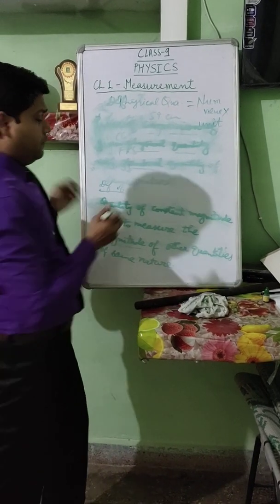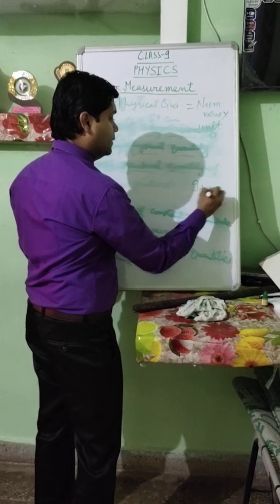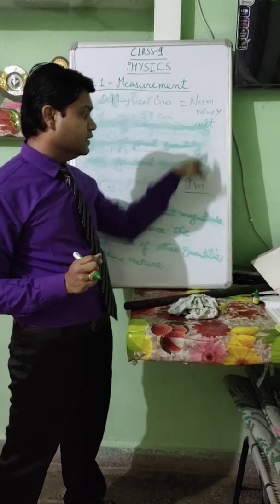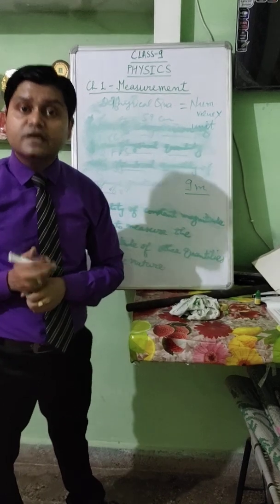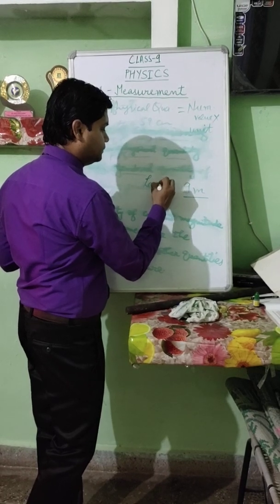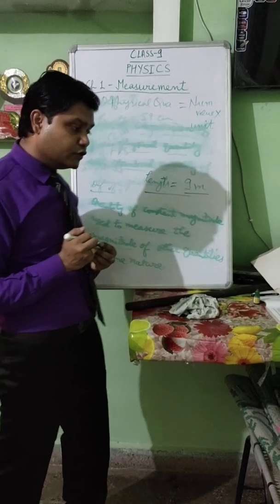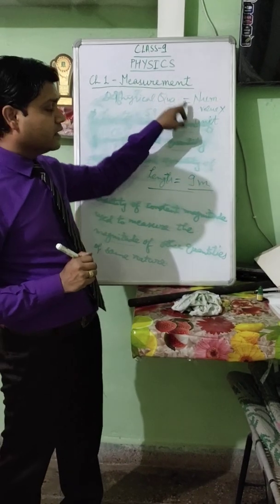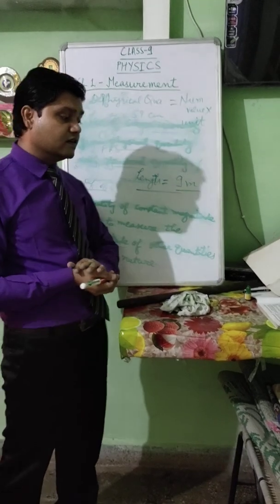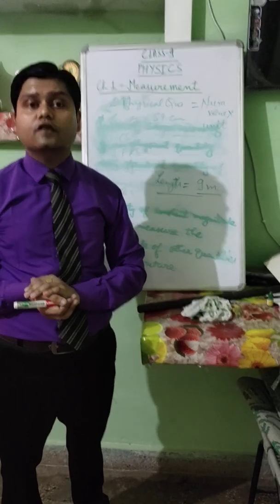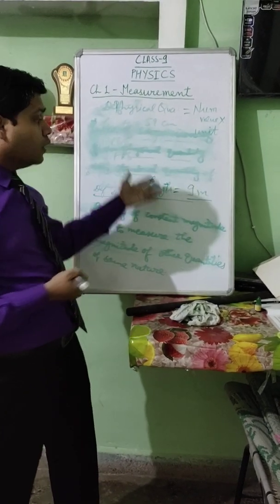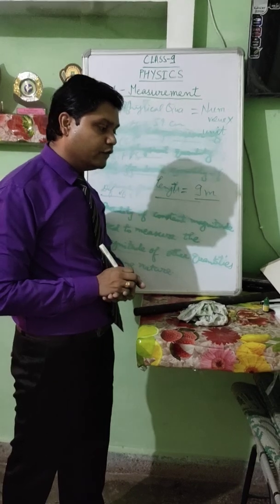For example, if I write 9 meters, then 9 is the numerical value and meters is the unit. From the unit meters, we can find out that this is the length of an object. So by this, we come to know that for defining any physical quantity, both the numerical value and the unit are very necessary.